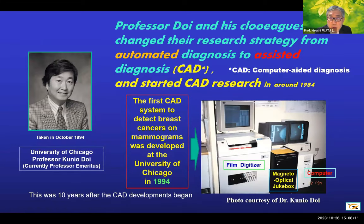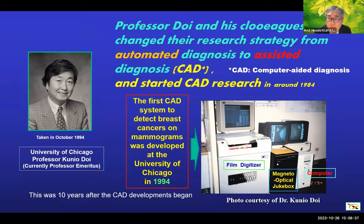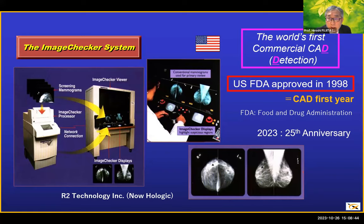Professor Kunio Doi of the University of Chicago changed the research strategy from automated diagnosis to assisted diagnosis, that is CAD. The photo on the right shows the first CAD system to detect breast cancers on mammograms, developed at the University of Chicago in 1994 — about 10 years after CAD development began there. This mammography CAD was successfully commercialized for the first time in the world in 1998 by a venture company called R2 Technology, which obtained regulatory approval from the United States FDA.